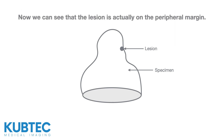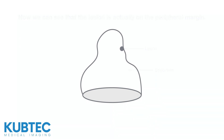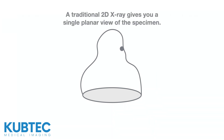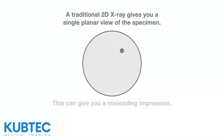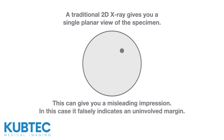Now we can see that the lesion is actually on the peripheral margin. A traditional 2D X-ray gives you a single planar projection of the specimen, and this can give you a misleading impression — in this case, indicating an uninvolved margin.